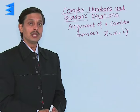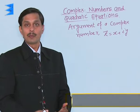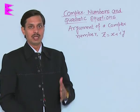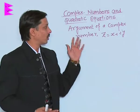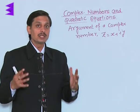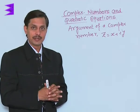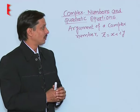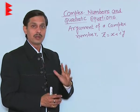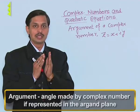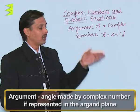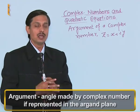Another thing which is really important, and many problems can be asked on the basis of this concept, is how to find the argument of a complex number. The basic question is: what is the meaning of the argument? To find the argument of a complex number, we must be aware of the concept. Argument is the angle made by the complex number when it is represented in the Argand plane.